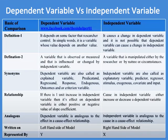If there is one unit increase in Independent Variable, then its effect on Dependent Variable is either a positive or negative value of the slope coefficient. A change in Independent Variable either increases or decreases the Dependent Variable. Dependent Variable is analogous to the effect in a cause-effect relationship, whereas Independent Variable is analogous to the cause. The Dependent Variable is written on the left-hand side of the model and represented by Y, whereas the Independent Variable is written on the right-hand side and represented by X.